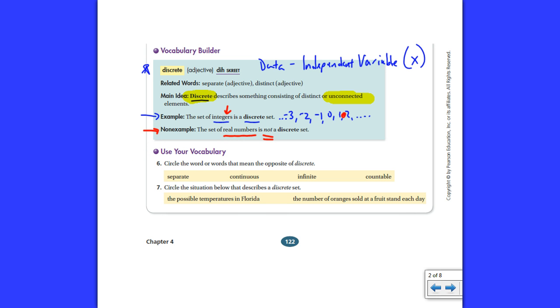Well, let's see if we can identify discrete in a situation here in just a moment. It says circle the word that means the opposite of discrete. Well, if this means it has breaks in it, the other type is called continuous.